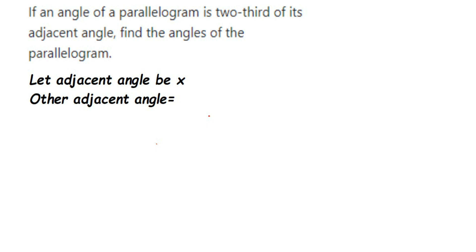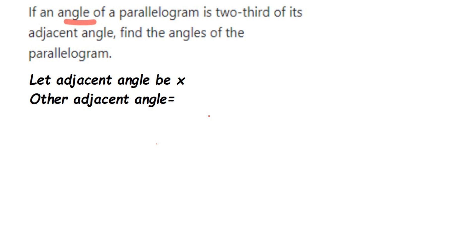Here is a question on parallelogram: if an angle of a parallelogram is two-thirds of its adjacent angle, find the angles of the parallelogram. What is given is that in a parallelogram, there is an angle which is two-thirds of its adjacent angle.